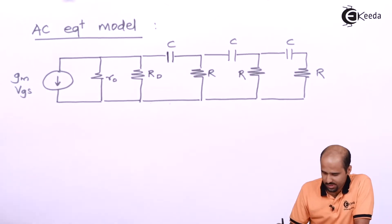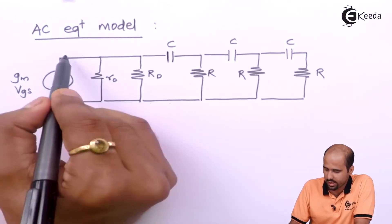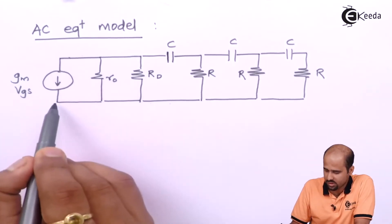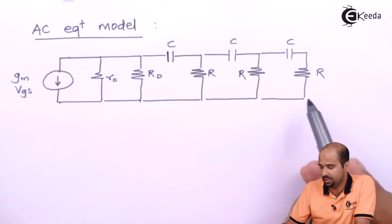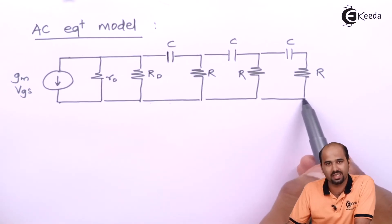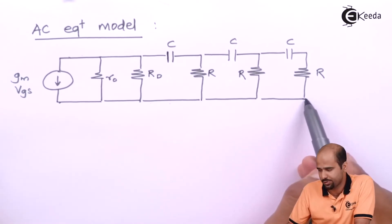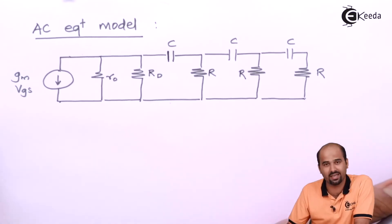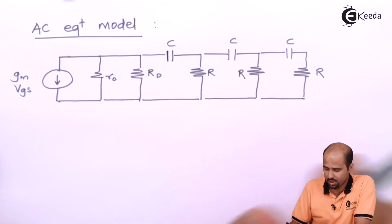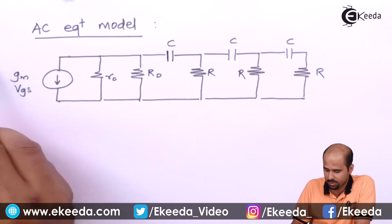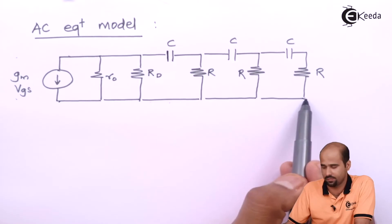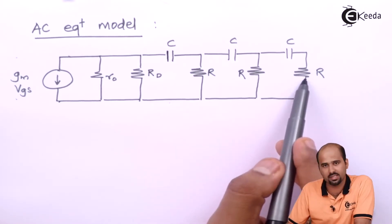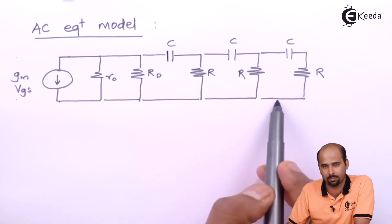This is basically the drain side of JFET, this is the source side of JFET, and here we are getting the feedback at the gate side. Since the gate resistance is infinity, I have to keep this particular terminal open, and this complete thing is connected here. So that complete resistance I am keeping to ground.